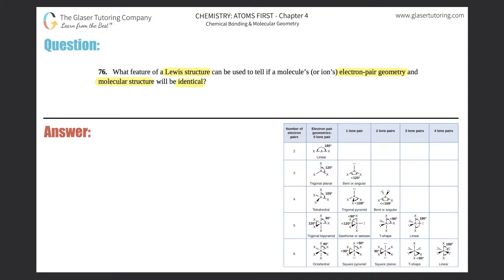There's only one certain instance in which a compound or a molecule's electron pair geometry—I'm just going to say EPG—will equal the molecular structure. There's only one instance when this is the case.